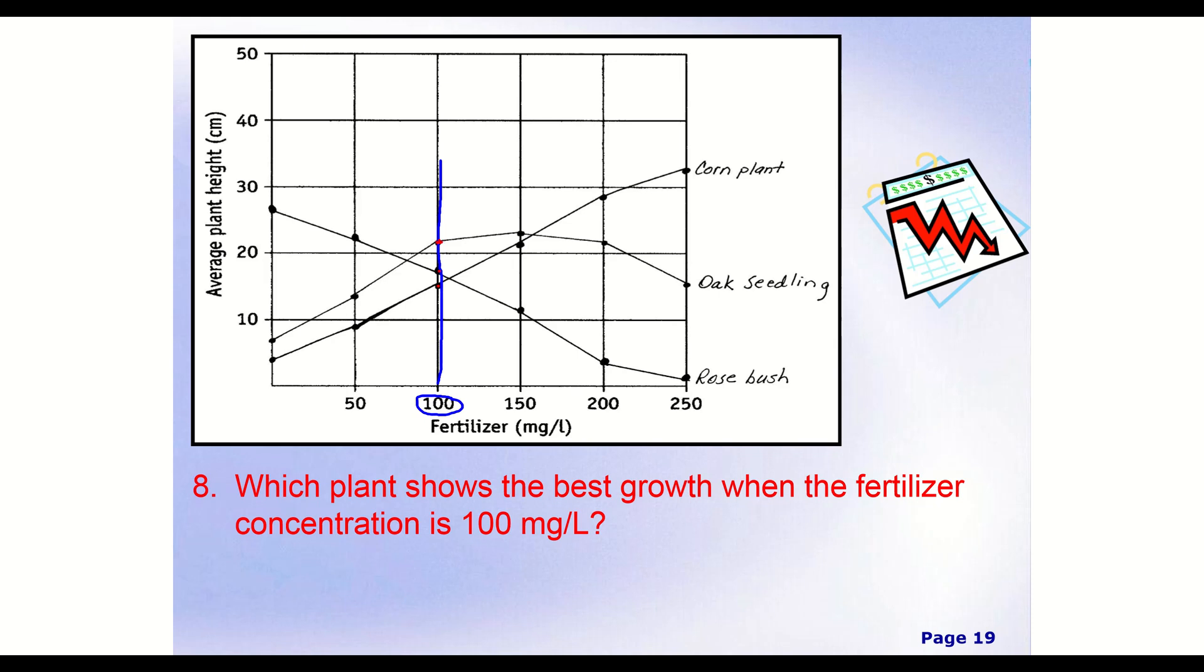So if we're looking at that, well, this line right here, if we follow that all the way down to where it belongs, so if we follow this one, our highest one, we find that it is the oak seedling. So that means at 100 milligrams per liter, our oak seedling is going to be doing better than the rest of the plants at this point. So our answer would be oak seedling.